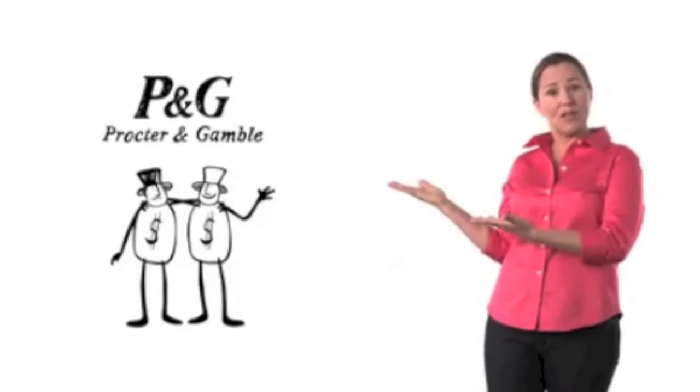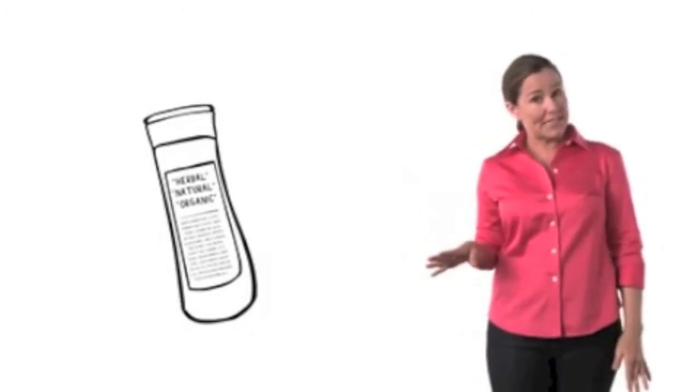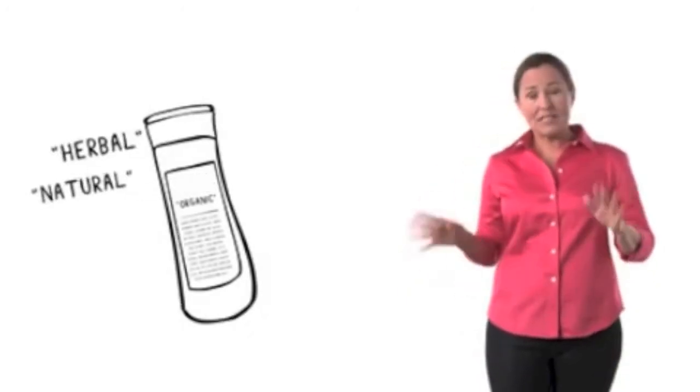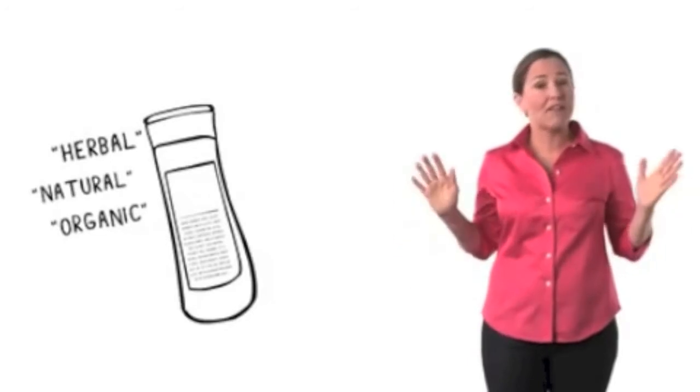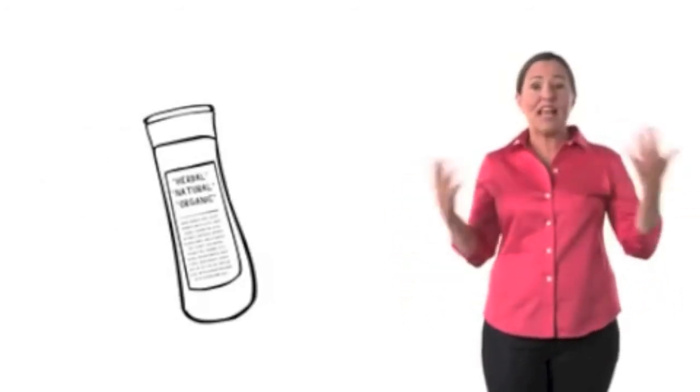This is Procter & Gamble. They're the ones offering me Herbal Essences, the number two shampoo in the country. It contains toxic petrochemicals made from oil. Since when is oil an herb? On cosmetics labels, words like herbal, natural, even organic have no legal definition. That means that anybody can put anything in a bottle and call it natural, and they do.